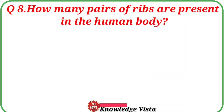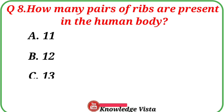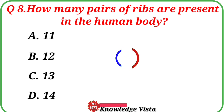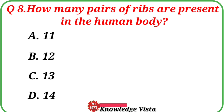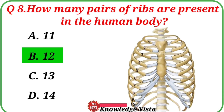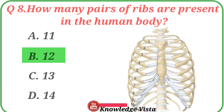Question number 8: How many pairs of ribs are present in the human body? Your options are: A. 11, B. 12, C. 13, D. 14. Correct answer is option B, 12. 12 pairs of ribs are present in the human body.